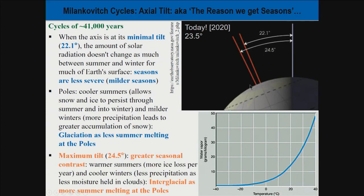At maximum tilt (24.5°) over the 41,000-year cycle, we get greater seasonal contrast. Warmer summers lead to more ice loss per year. Cooler winters mean less moisture in the atmosphere and less precipitation at the poles, so we're melting more ice but accumulating less. That's why maximum tilt is associated with interglacial periods. The angular tilt doesn't change the total amount of solar radiation hitting Earth — that's what eccentricity governs — but it does affect seasonal differences in ice accumulation.